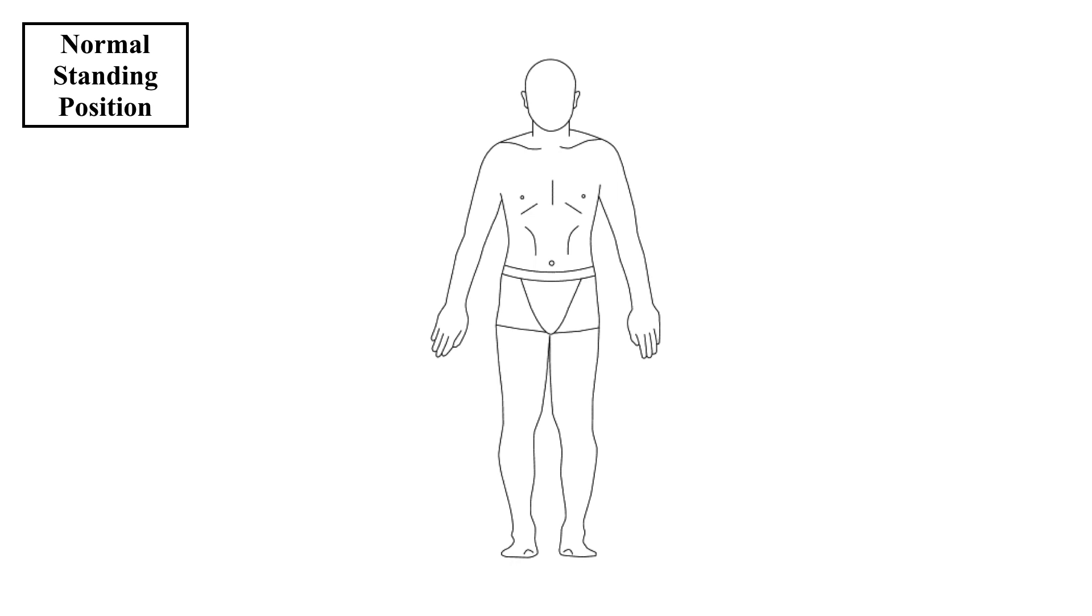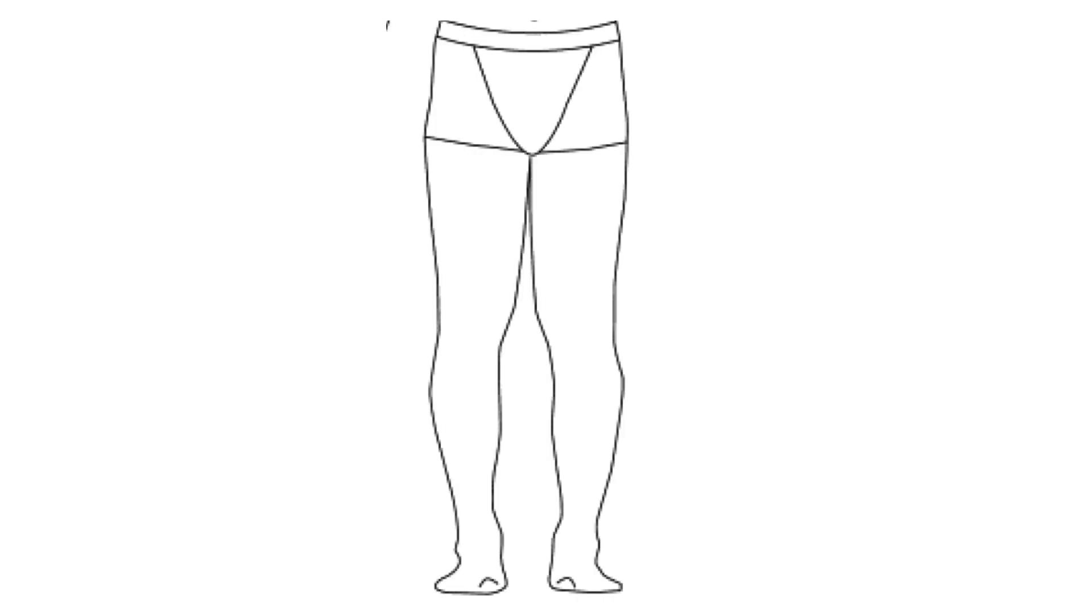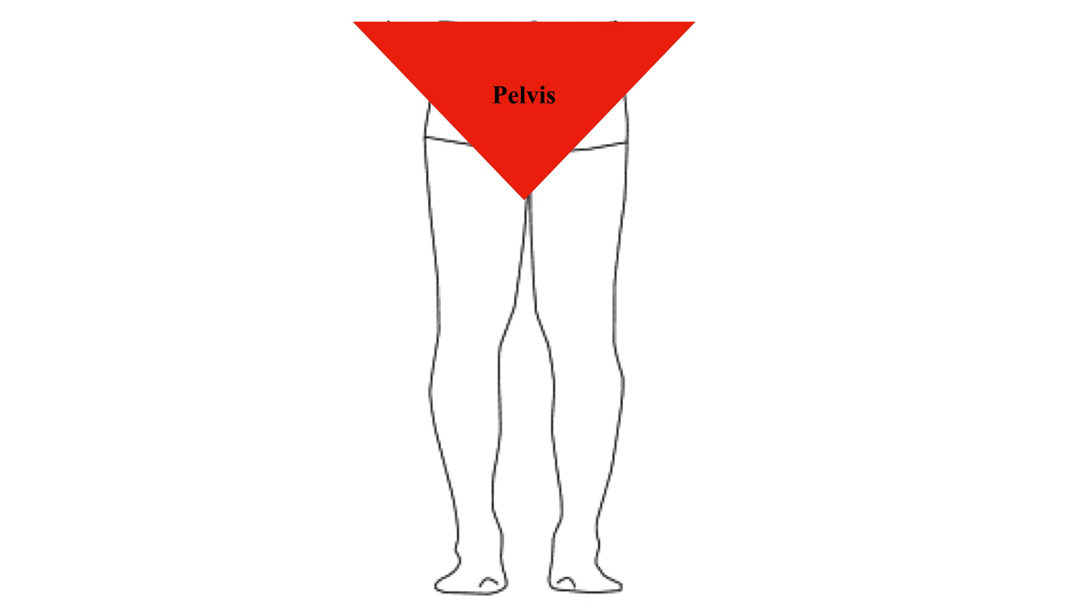This is the normal anatomical standing position and to understand the Trendelenburg test better, concentration has to be given to both the lower limbs, especially the pelvic structure. Now an enlarged image of the pelvis with both lower limbs. Consider this red triangle as the pelvis and both the upper corners as the anterior superior iliac spine. Consider both upper corners as anterior superior iliac spines when seen from the front or posterior superior iliac spines when seen from the back.